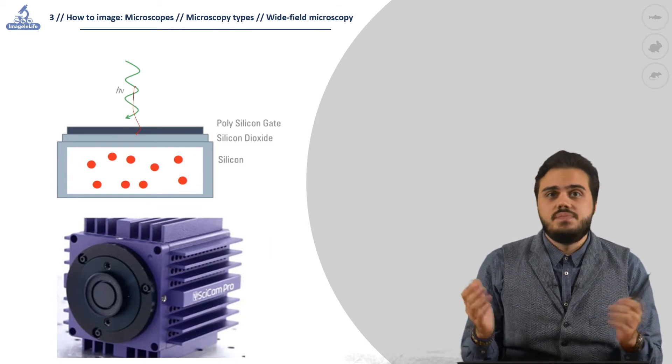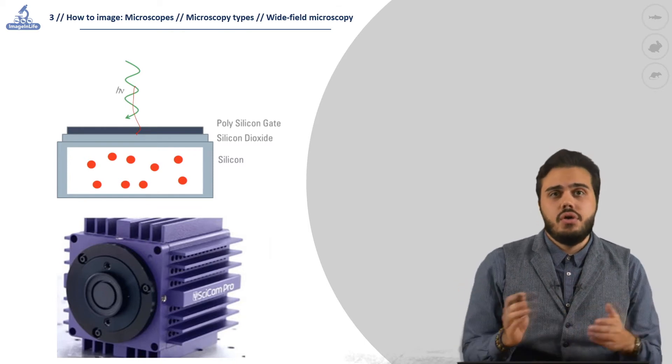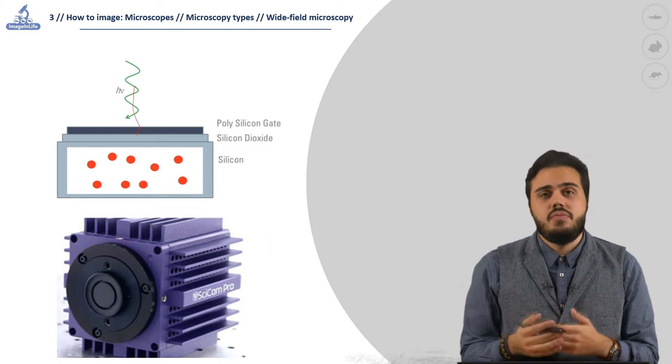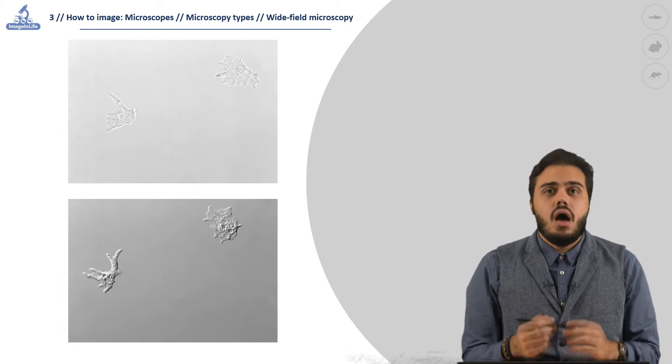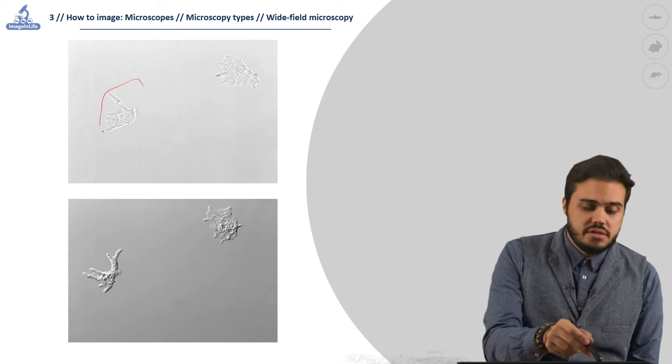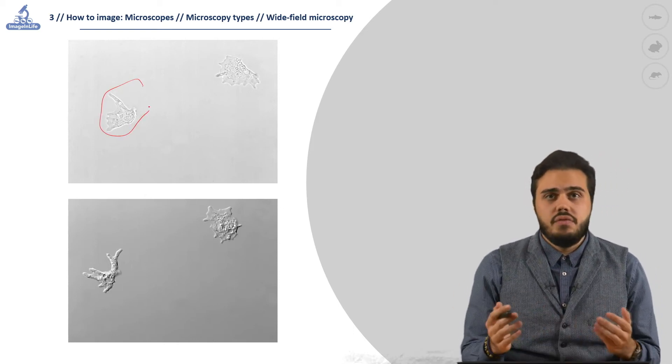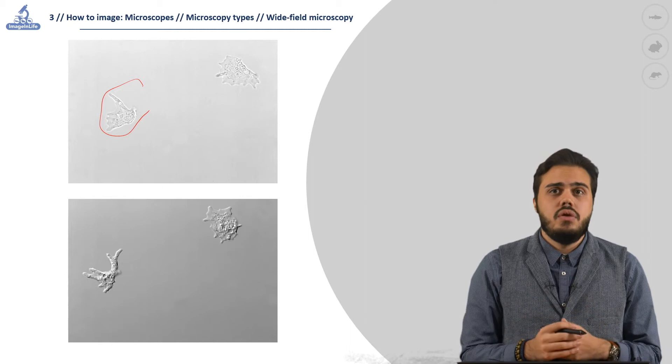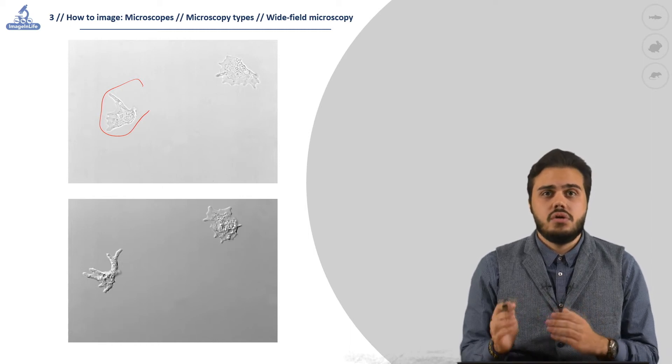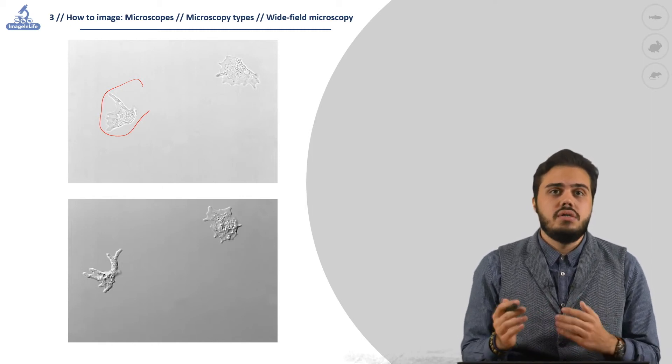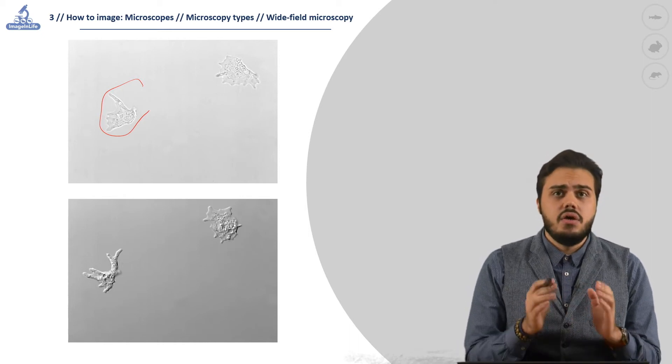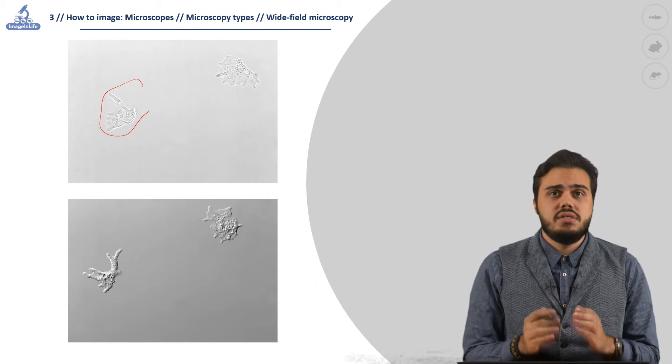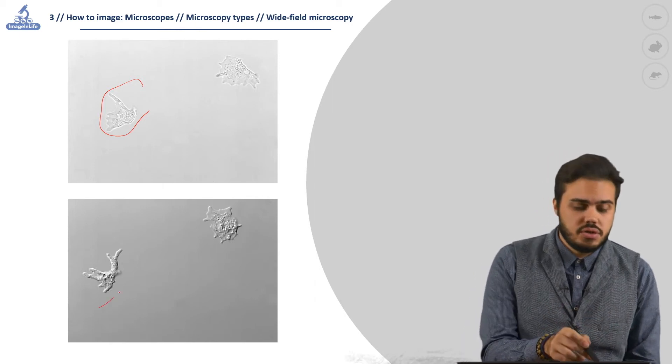As always, choosing between one technology or the other depends on the nature of the experiment itself. Understanding samples like cells can be hard to observe using normal bright field. To solve this problem, we can use differential interference contrast, also known as Nomarski optics. This technique uses polarized light to illuminate the sample and greatly enhance the contrast.